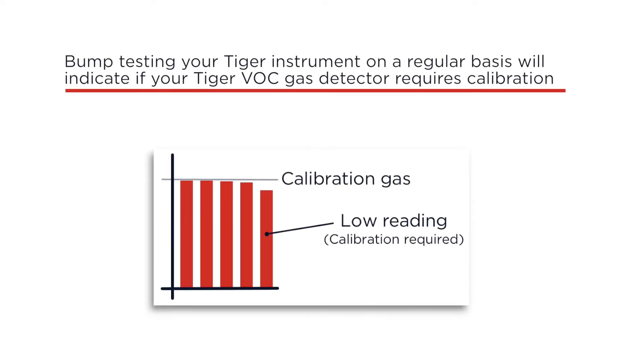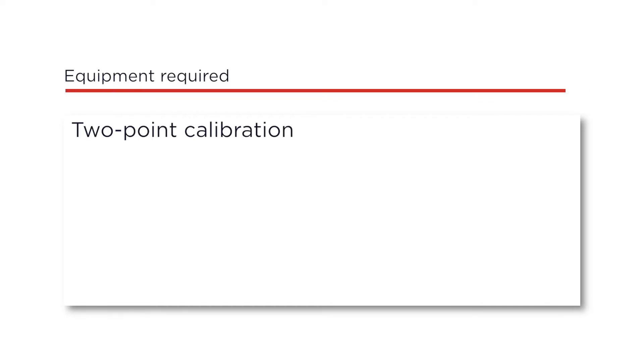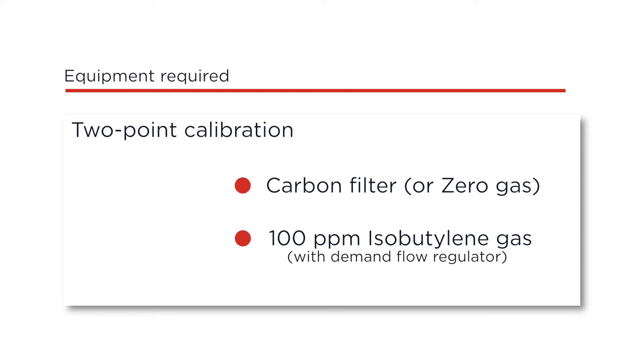Bump testing your TIGER instrument on a regular basis will indicate if your TIGER VOC gas detector requires calibration. In this example, a two-point calibration will be carried out using a carbon filter for zero and 100 ppm isobutylene for the span.